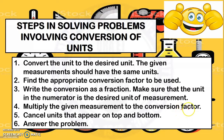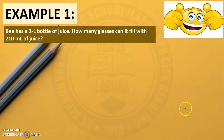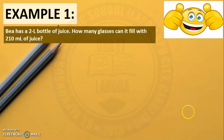Now, let's have examples and apply these steps. Example number 1: Bea has a 2-liter bottle of juice. How many glasses can it fill with 210 milliliters of juice?